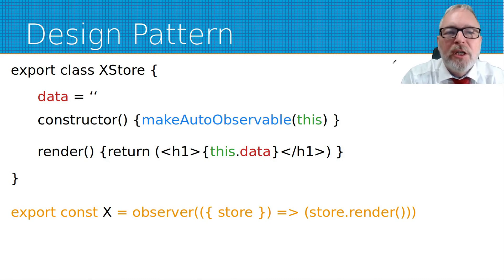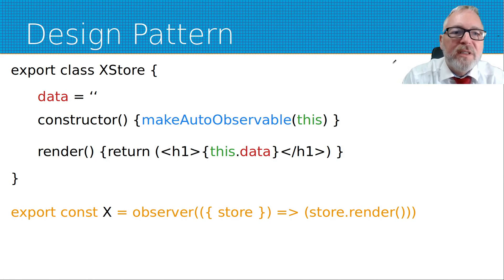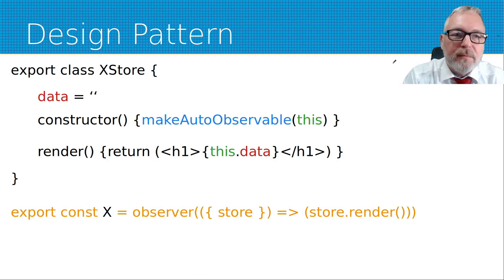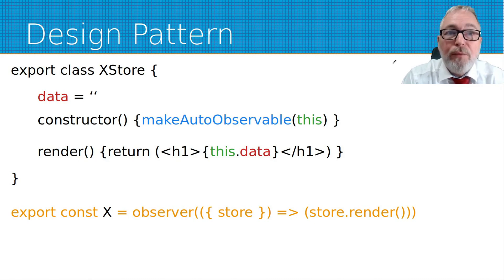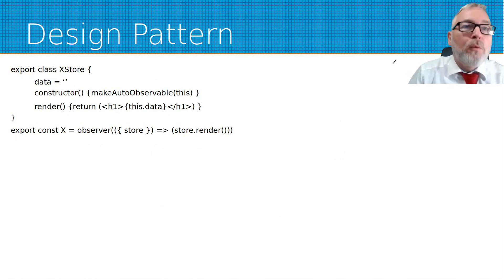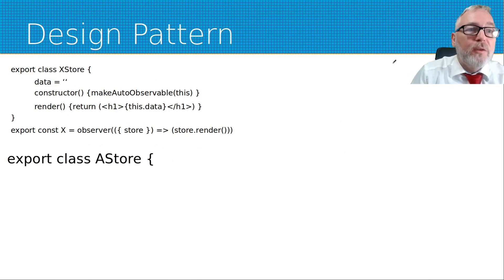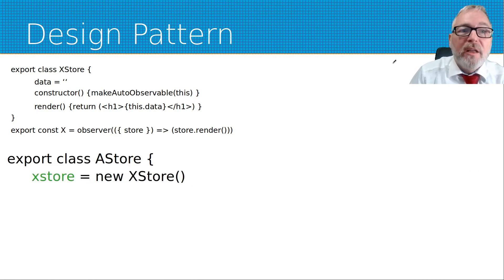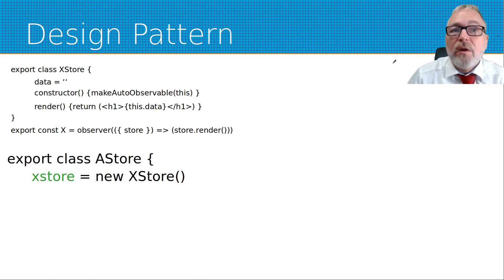We also need a variable: export const xObserver = (xStore) => store.render(). That means xStore holds the data, and when we define the data here we can use it in HTML later. We can also have an RStore — another model — which has a link to an instance of XStore.